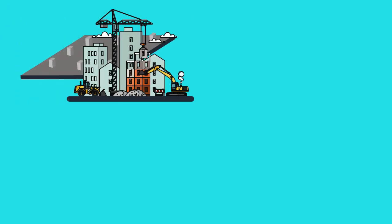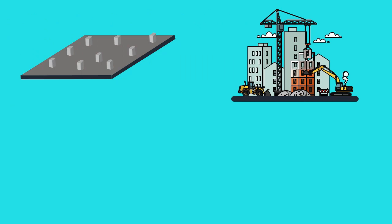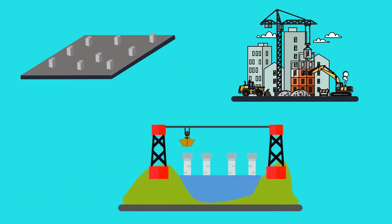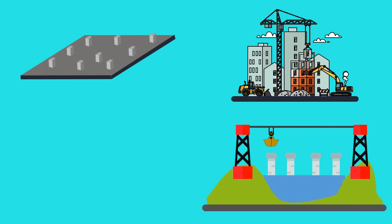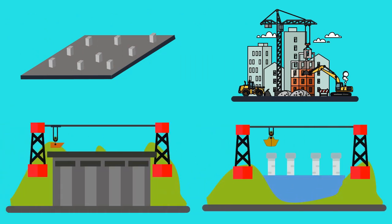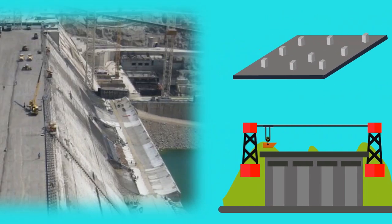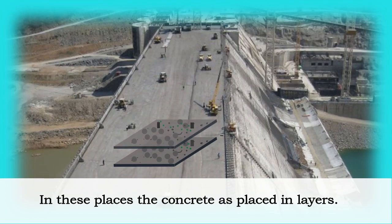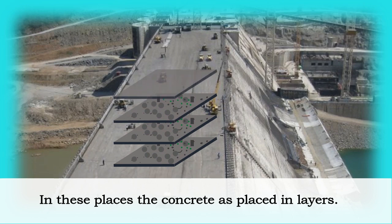In the construction of raft foundations, high-rise buildings, bridge piers or abutments, dams, etc., concrete is generally placed in a large mass. In these places, the concrete is placed in layers.